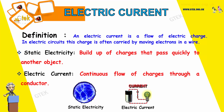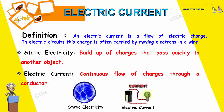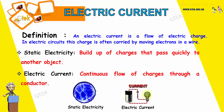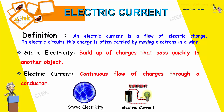What is electric current? Electric current is nothing but the continuous flow of charges through a conductor. You can see an electric current which is passing over here. This is the battery from where you can see the connection has been established to the bulb.